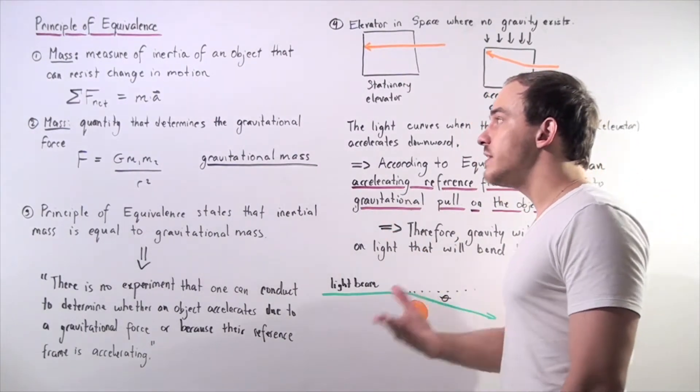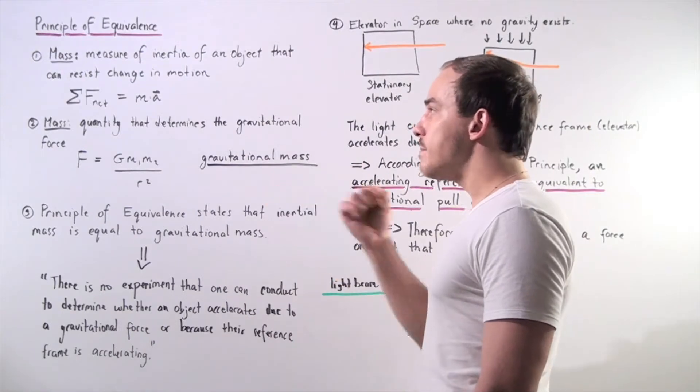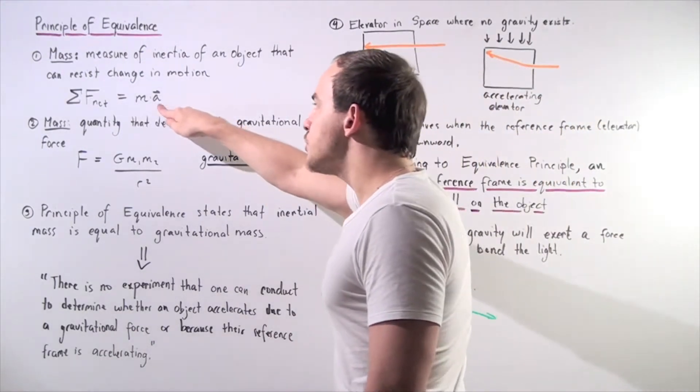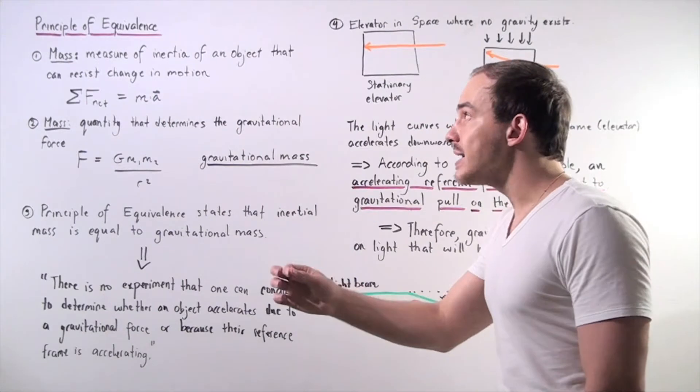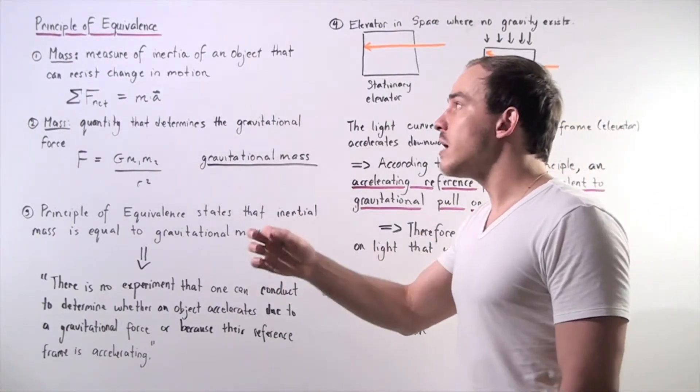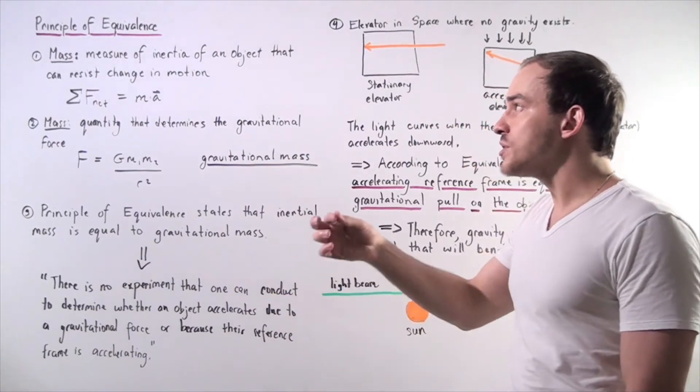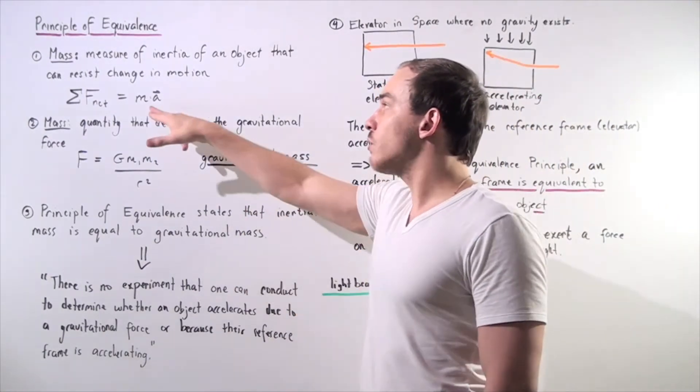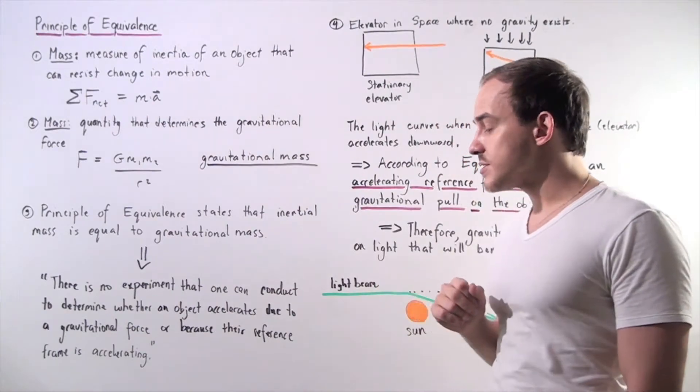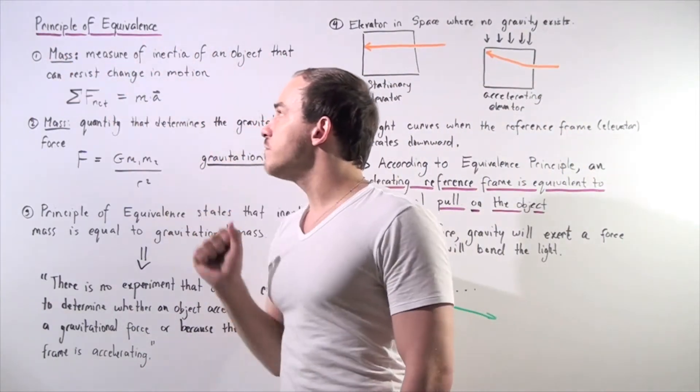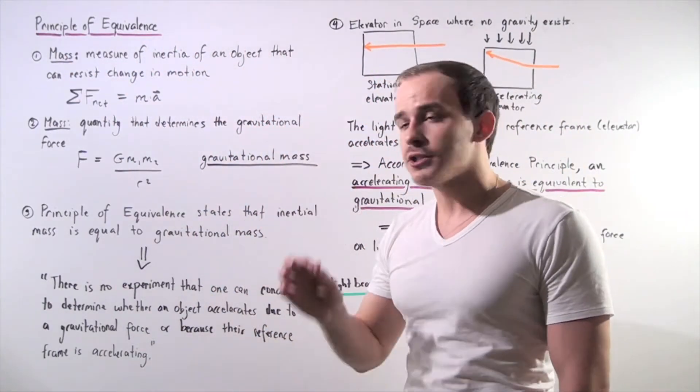Now for any given net force, the higher the mass is, the lower our acceleration is. So the higher the mass, the more inertia found in our object and the more likely our object will resist change and therefore the lower our acceleration of the object is. So this definition of mass is known as inertial mass.